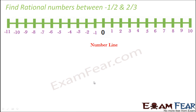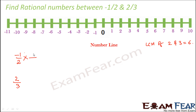Let's try one more exercise: find rational numbers between -1/2 and 2/3. We follow the same tactic — change both numbers to have the same denominator. We find the LCM of 2 and 3, which is 6.